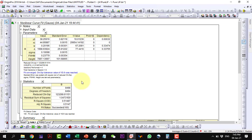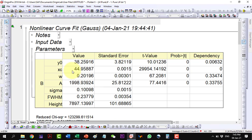Our xc value, the location of our peak, is 44.95887 and the full width at half maximum is 0.23779. We will need this value and this value for our calculations.